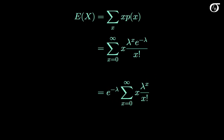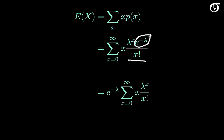The expectation of a discrete random variable x is equal to the sum over all possible values of x, of x times its probability of occurring. For the Poisson distribution that works out to x times the probability mass function, summed over all possible values of x. Since e to the minus lambda does not involve x, I'm going to take that outside of the summation.